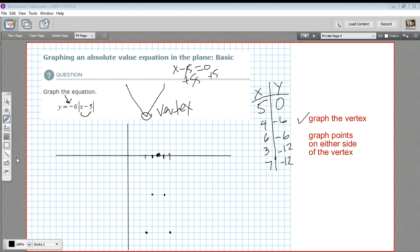Once I've got all those points in there, I can go ahead and draw my two arms. And there we go. That is what negative 6 times the absolute value of x minus 5 looks like. And that's how to graph an absolute value equation.